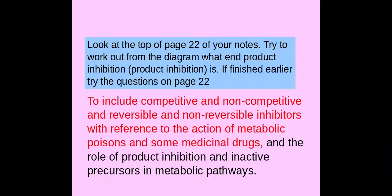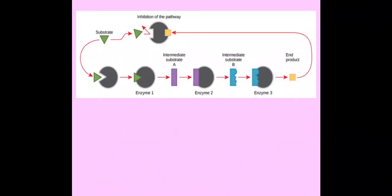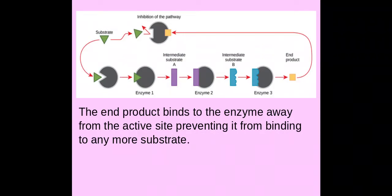End product inhibition is where the end product of an enzyme pathway acts as an inhibitor for the initial enzyme. It does this by binding to an allosteric site — not the active site — so it acts as a non-competitive inhibitor. This prevents any more substrate from binding or forming an enzyme-substrate complex with the enzyme.